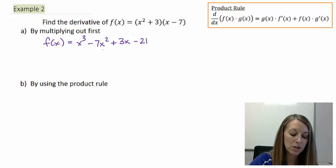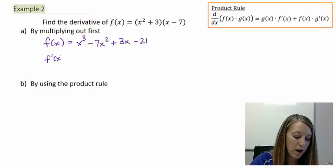So I basically FOILed it, just flip-flopping my outside and my inside terms so they're in descending order. Now the derivative, f prime of x, is 3x squared minus 14x plus 3.